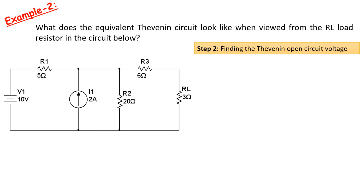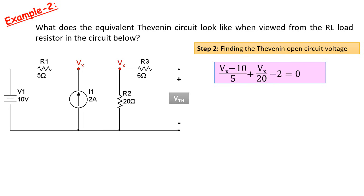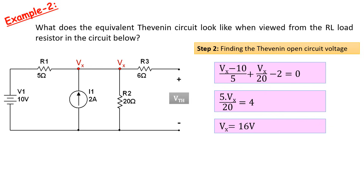Step 2 is to find the open-circuit voltage of Thevenin. If we find the voltage here by making an open circuit where the RL resistor is, we can find Thevenin's open-circuit voltage. The voltage here is actually the voltage across the 20 ohm resistor R2. To find this voltage, it is enough to find the voltage at the point indicated as Vx. Since the 6 ohm resistor R3 will be in an open circuit, this resistor has no effect on the circuit. If we write Kirchhoff's current law at the point Vx according to the node voltages method, the equation (Vx - 10)/5 + Vx/20 - 2 = 0 will appear. When we simplify this equation, it becomes 5Vx/20 = 4. From here, the value of Vx is found as 16 volts. Since VTH Thevenin voltage is equal to Vx, the open-circuit voltage of Thevenin will also be 16 volts.